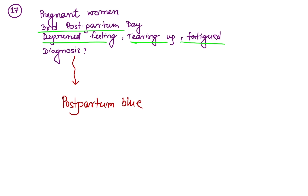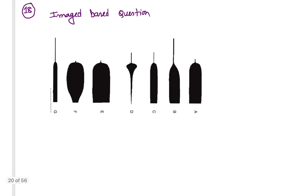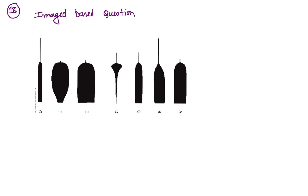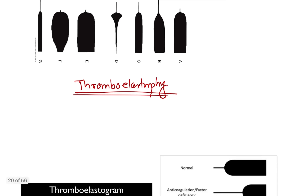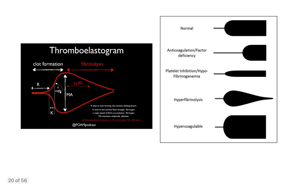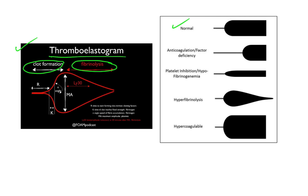The next question is another image-based question. This image is a typical thromboelastography graph. Thromboelastography is a technique by which you can assess normal or abnormal patterns of different clotting factors. On the graph, one part represents clot formation and the other part represents fibrinolysis. This pattern shown is the normal thromboelastography.